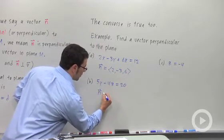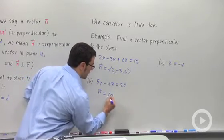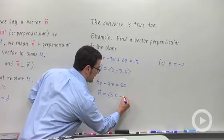Here, n would be, we don't have an x term, so I'd put a 0 down for that. But I'd have 5 and negative 4.